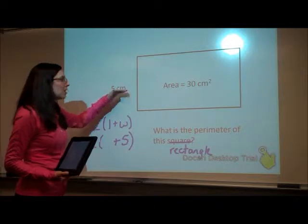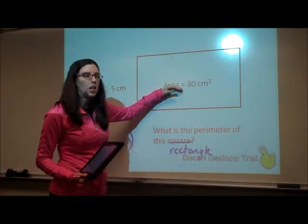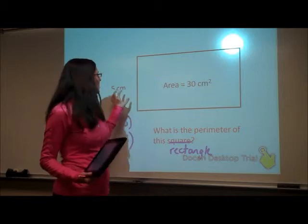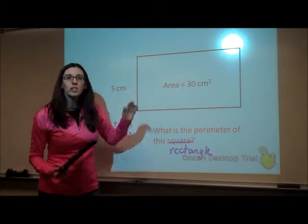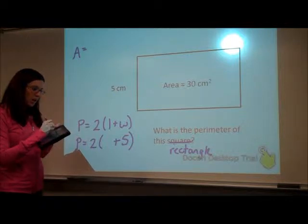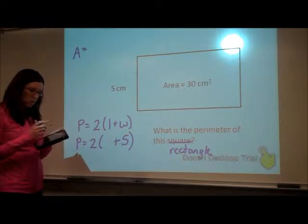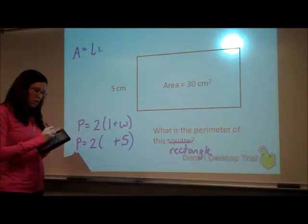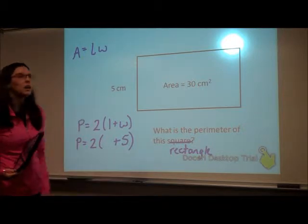So we have a width and we have area. I'm going to write down something that relates to the width and the area, the two things that they gave me. Well, that would be my area formula. So the area of a rectangle is the length times the width, or base times height.